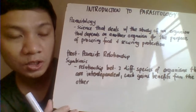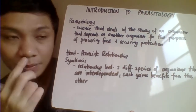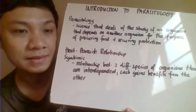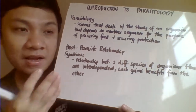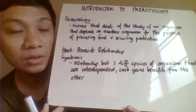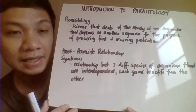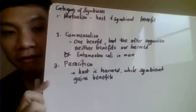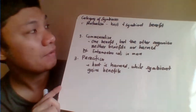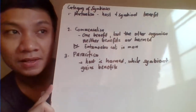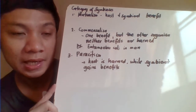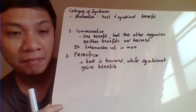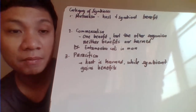We have the host-parasite relationship, which we call symbiosis. Symbiosis is the relationship between two different species living together, so interdependent to one another that living apart is not possible. The first classification of symbiosis is mutualism — a relationship between two organisms in which both try to benefit one another and neither is harmed or injured.